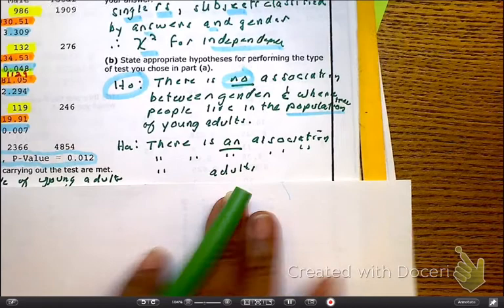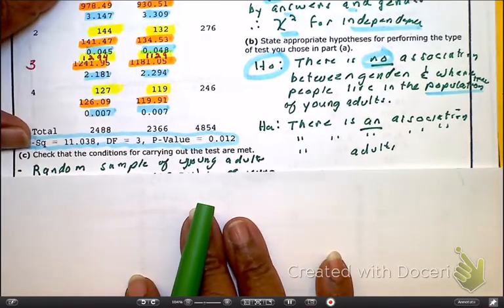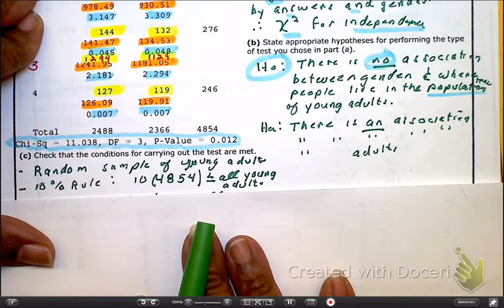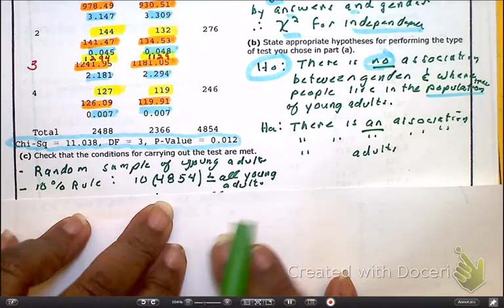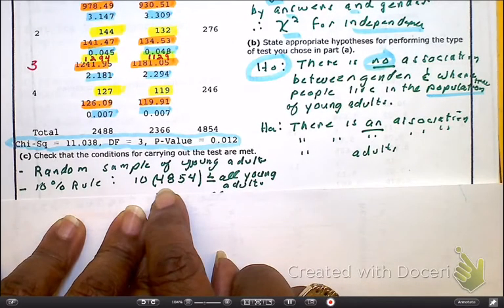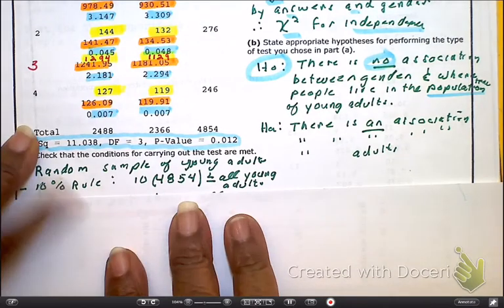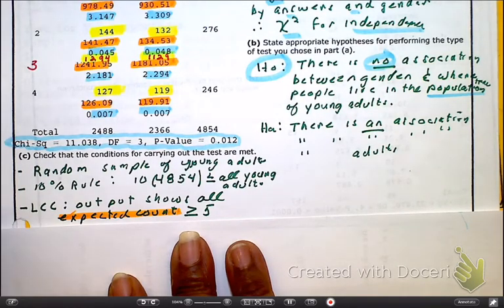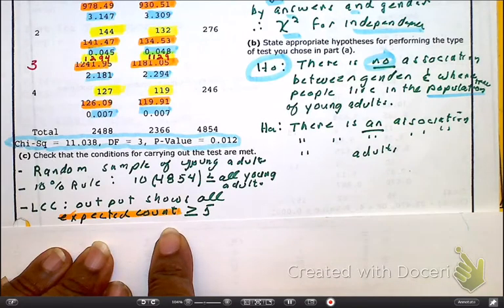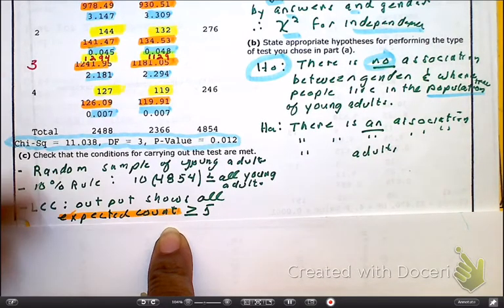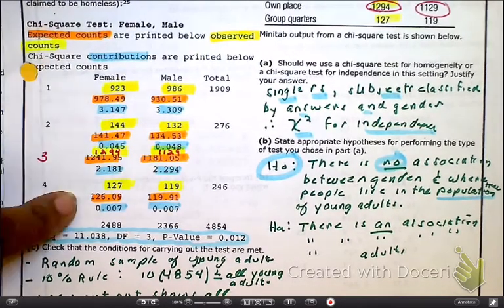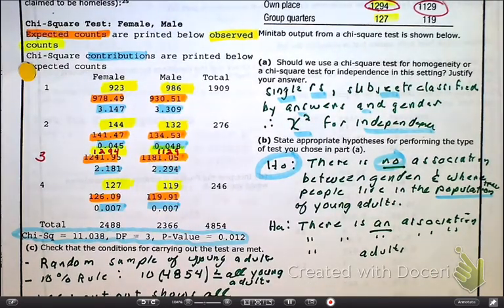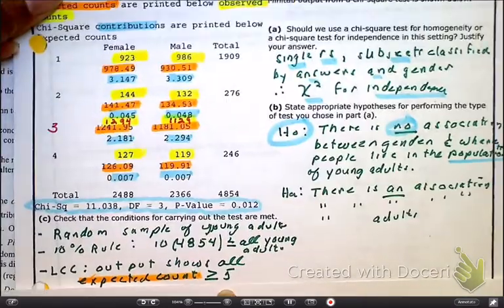The next thing I want to look at are our conditions and assumptions. Well, here we did randomly select the young adults. Yes we did. And we have the 10% rule. As we look at the 10% rule here, we're looking at all young adults are going to be greater than the 10 times the 4,854. Last but not least, we know we still got to deal with LCC, our large count condition. And as we look at our large count condition, let's look at our expected count is greater than or equal to 5. And we didn't have to do any work. Why? Wait for it. All remember, everything in orange, they already gave us the large, gave us our expected count. So here we don't have to write it down and then confirm it. We saw it before we even did it for once.